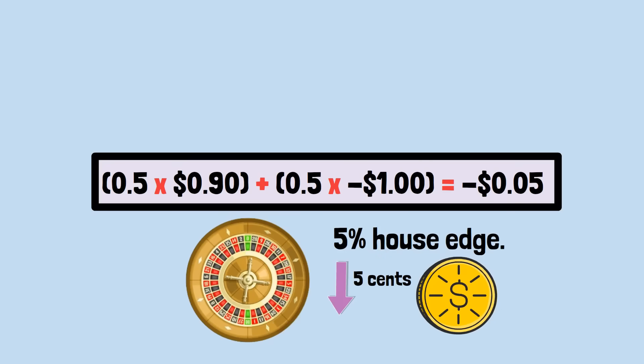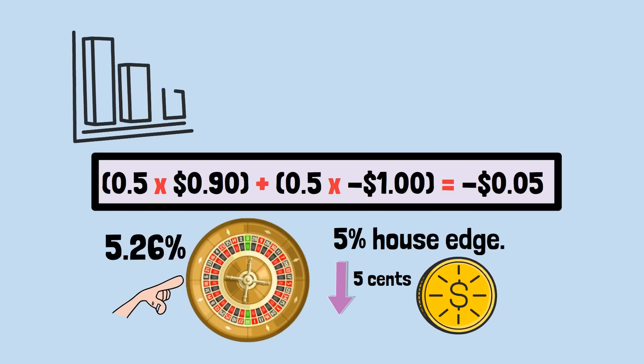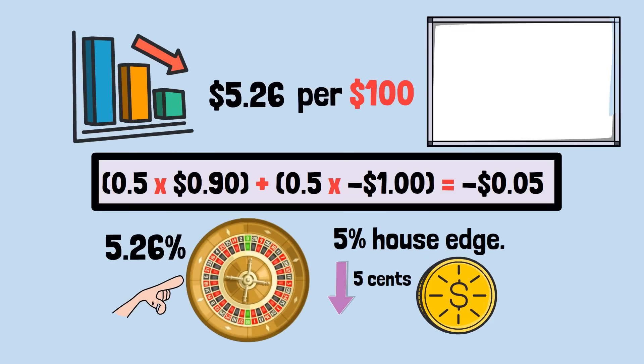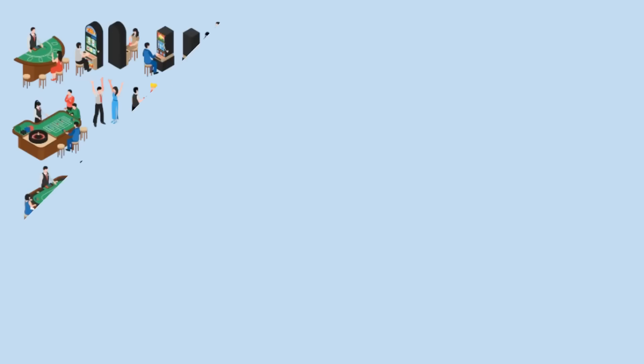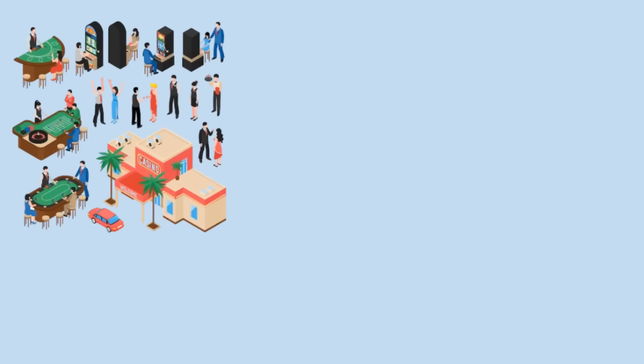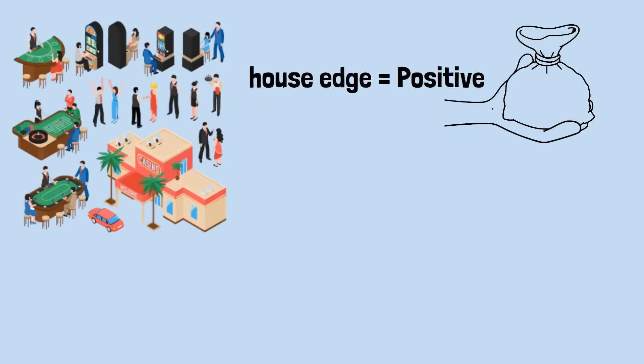Real roulette has a house edge of 5.26% on double-zero wheels. This means that over time, you'll lose $5.26 for every $100 you wager, regardless of whether you bet on red, black, odd, even, or individual numbers. Different casino games have different house edges, but they all share one characteristic: the house edge is always positive, meaning you always have a negative expected return.